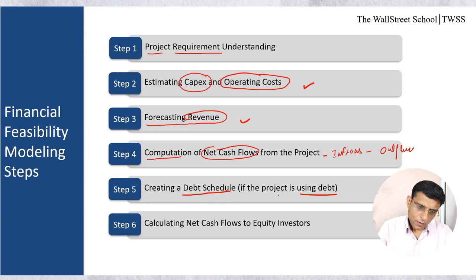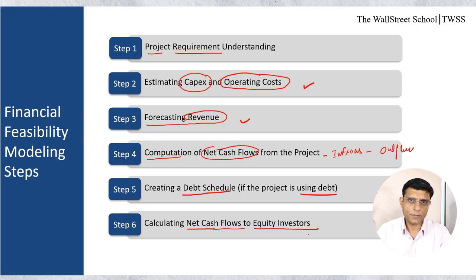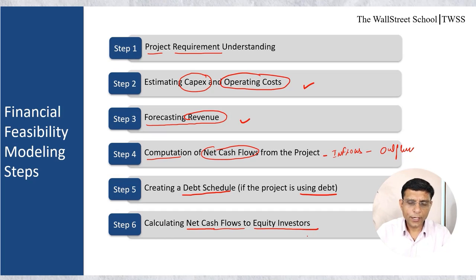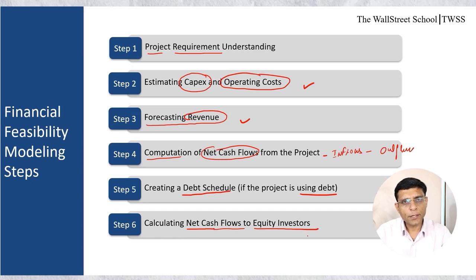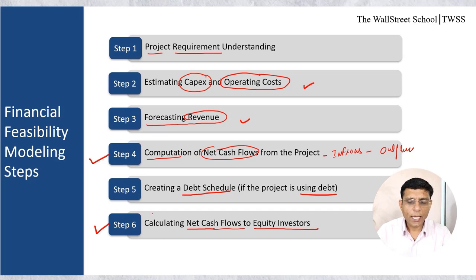Step 6: Calculate net cash flows to equity investors. Basically, total net cash flows to the project minus interest expense, plus debt raised, minus debt repaid. From step 4 we get total cash flows from the project, and then we make adjustments for debt to arrive at cash inflows and outflows to the equity holders.